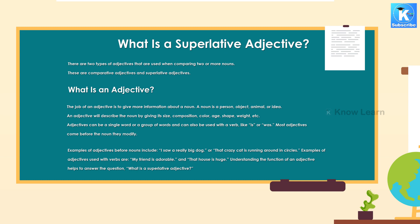Examples of adjectives before nouns include: I saw a really big dog, or that crazy cat is running around in circles. Examples of adjectives used with verbs are: my friend is adorable, and that house is huge. Understanding the function of an adjective helps to answer the question, what is a superlative adjective?